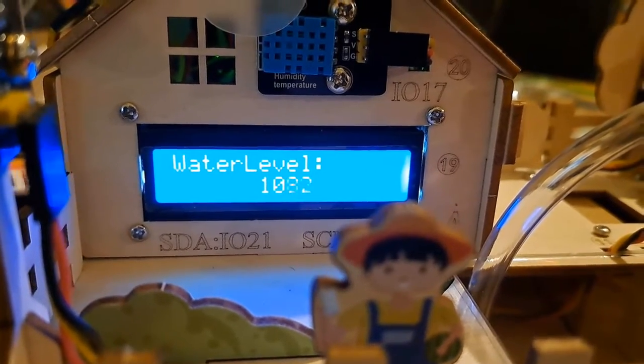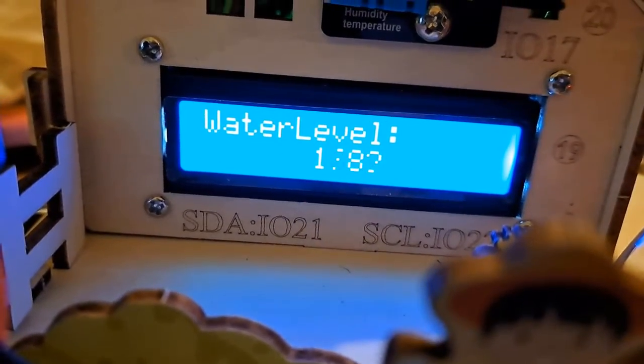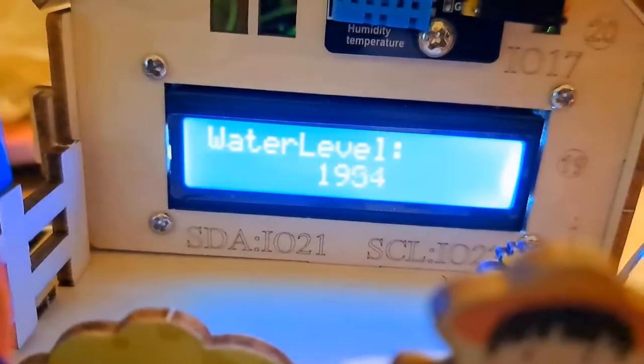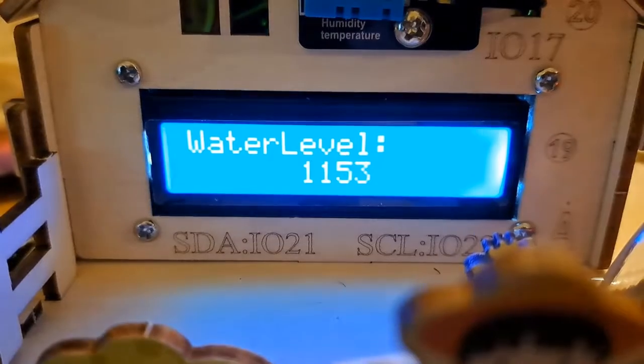It's showing the water level sensor. It's on this side and works really well. So if I put my finger on there and my finger is a little bit wet, it goes up. And if it gets above 2000, it makes the buzzer alarm.